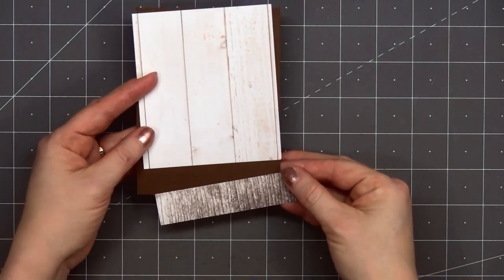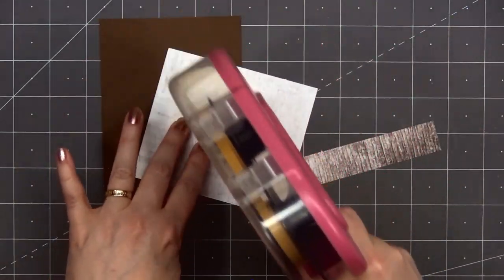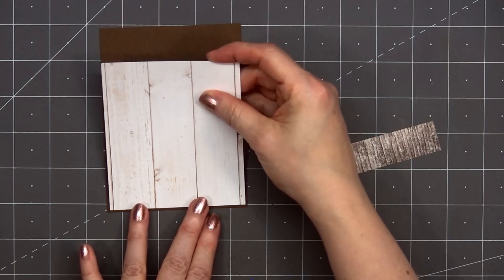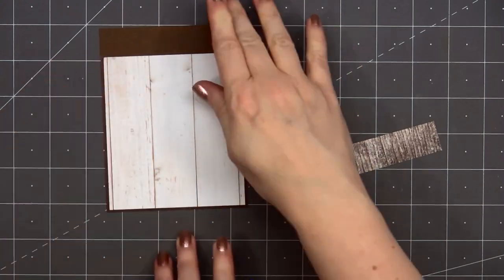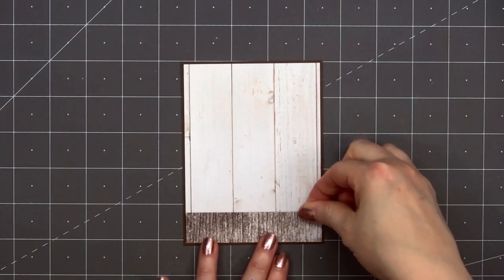I know I've said it several times, but I love the Grain and Grunge paper pad. I selected two of the patterns: a lighter white grain for the larger panel and a darker grain for that bottom strip.